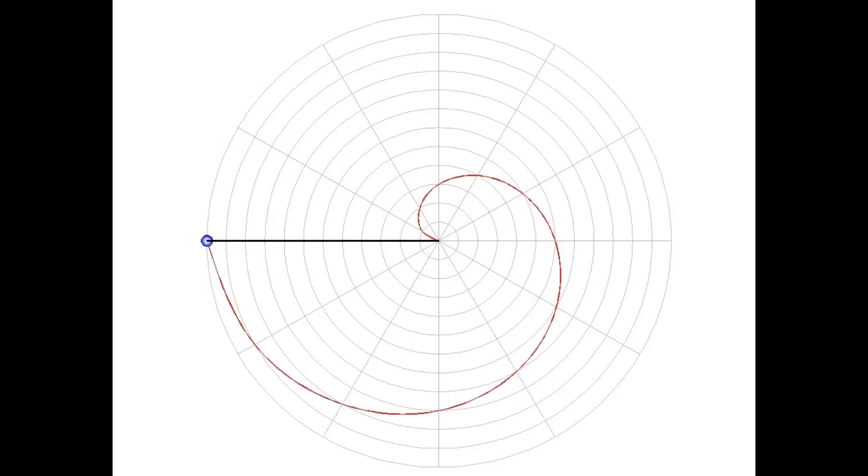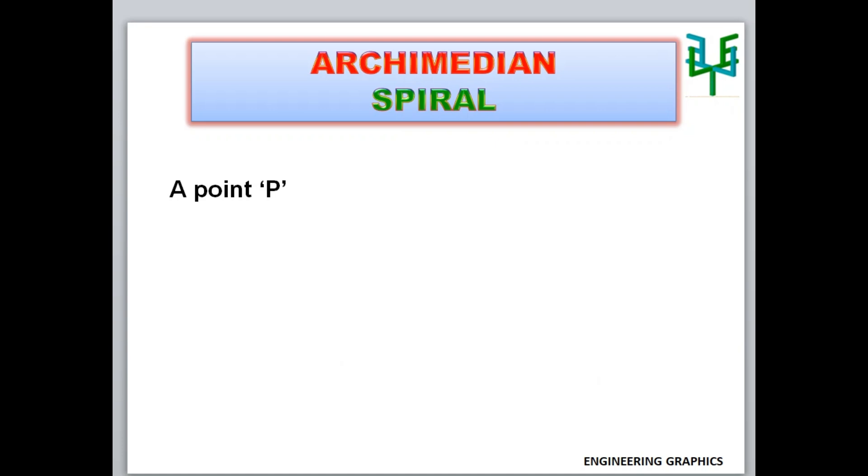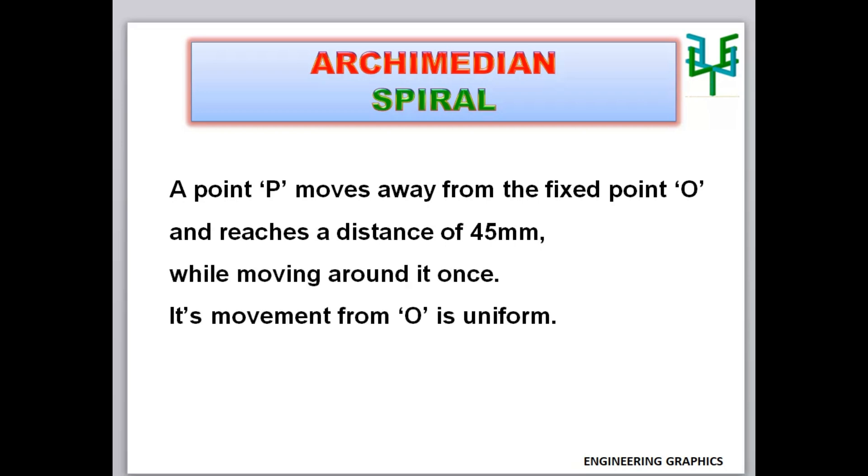Let us see the construction of a spiral in detail. A point P moves away from the fixed point O and reaches a distance of 45 mm while moving around it once. Its movement from O is uniform. Draw the curve traced by the point P.